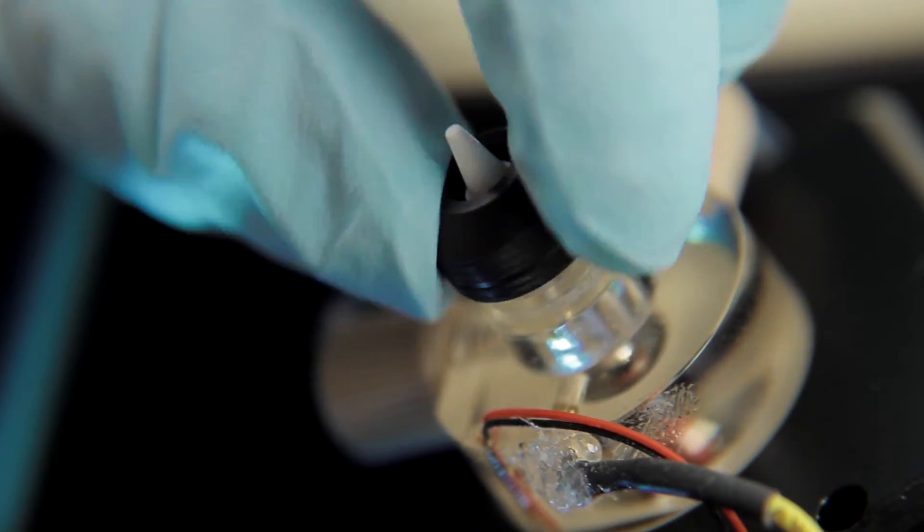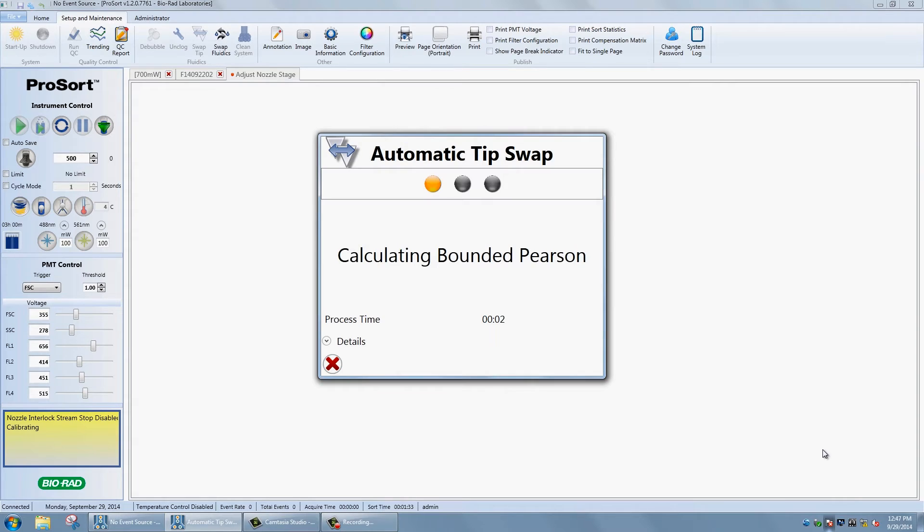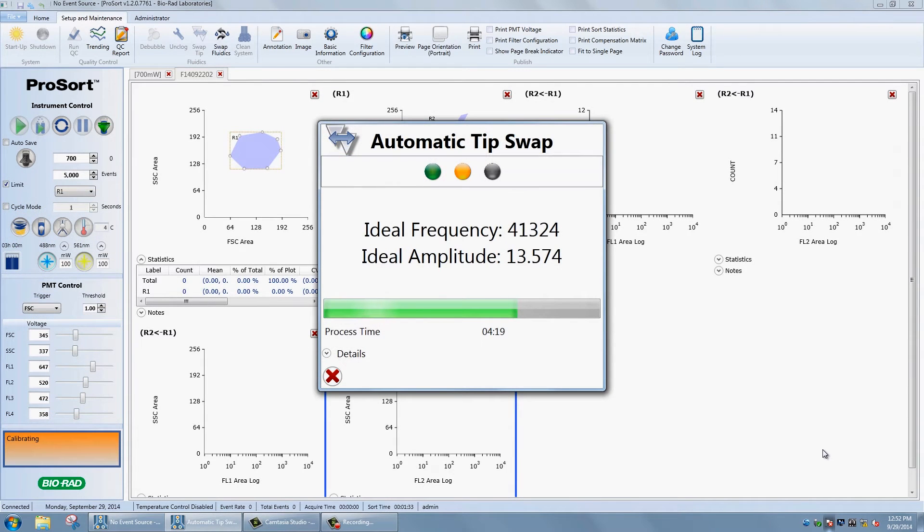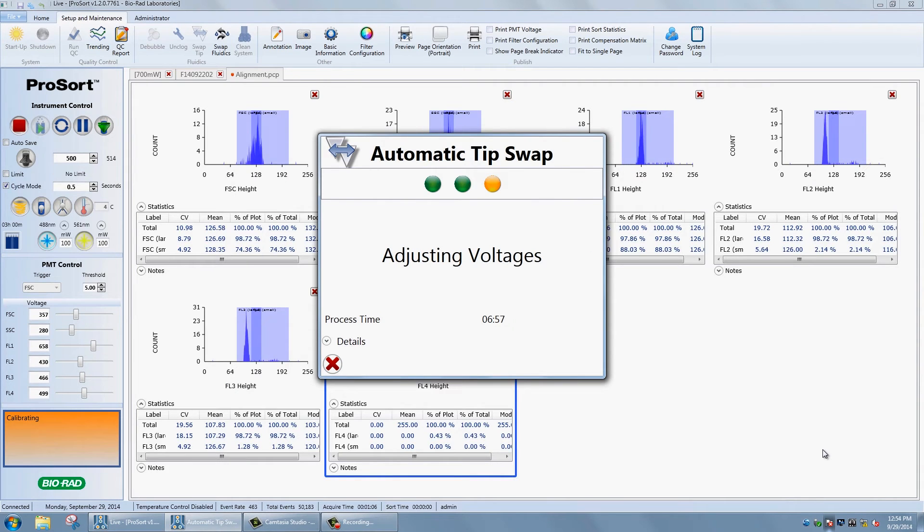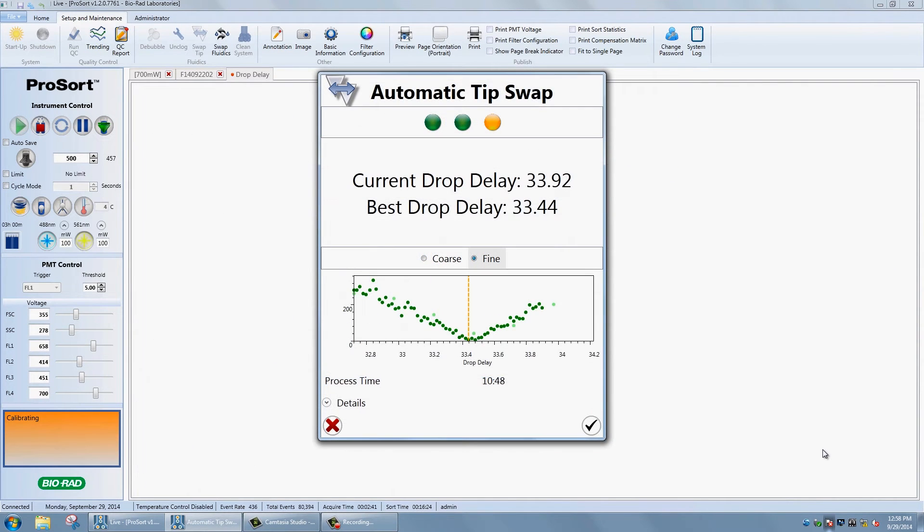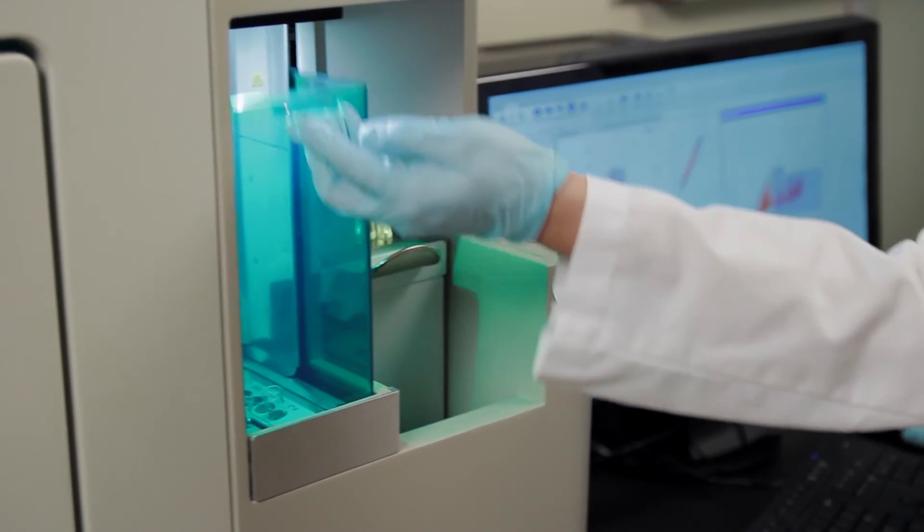Once you've reinstalled the nozzle tip, the software does the rest of the work. Sophisticated software algorithms make accurate micrometer adjustments to find the ideal tip alignment, amplitude, and frequency. The software then proceeds directly to a quality control procedure and drop-delay calculation. All of this is done automatically so you can walk away and feel confident that your cell sorter is set up correctly.